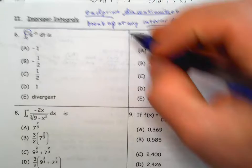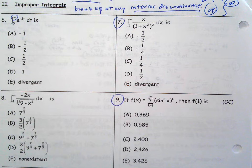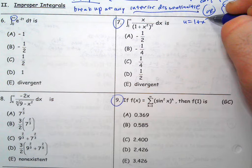Try problems 7 and 9. Pause the video, try them, unpause it, and we'll check your answer. You can do 6 and 8 on your own later. For number 7, we've got to do regular integration first. I'll do u-substitution, which is perfect. I get that x dx and I want the 2.